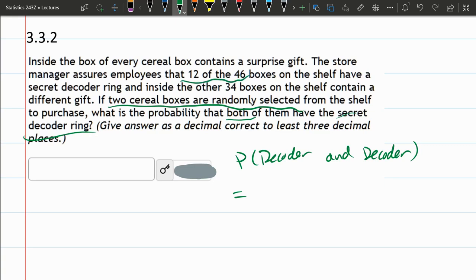12 of 46 have this decoder. So before, if we put the box back, this is the situation we would have. 12 out of 46, and then a second time, the same thing, 12 out of 46.